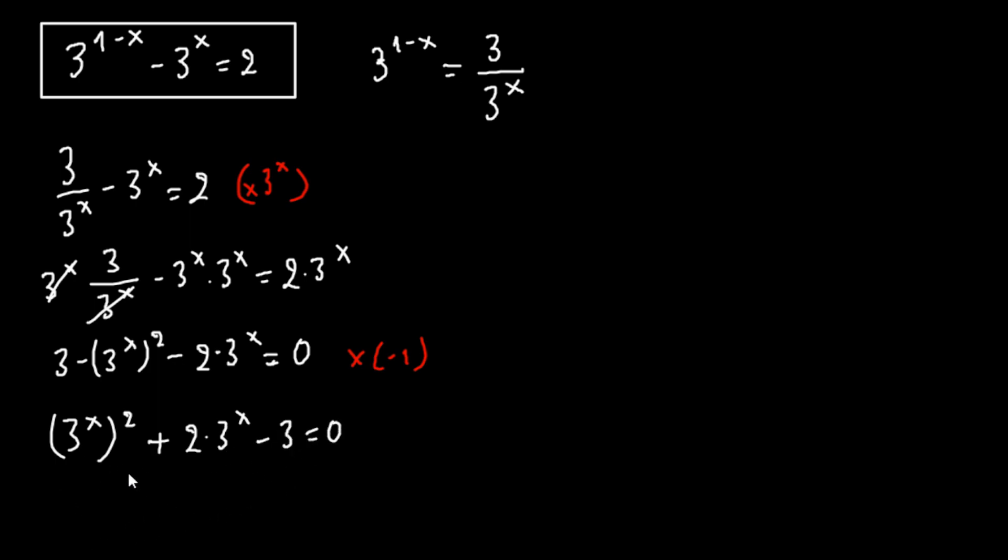Here we see a form of quadratic equation. Now if we let u equals 3 to the x, this can be written as u squared plus 2 times u minus 3 equals 0.